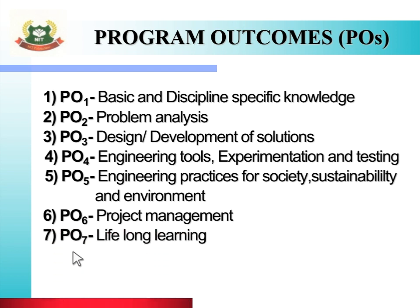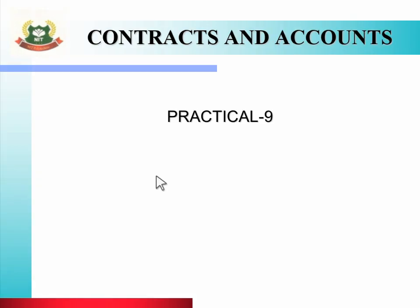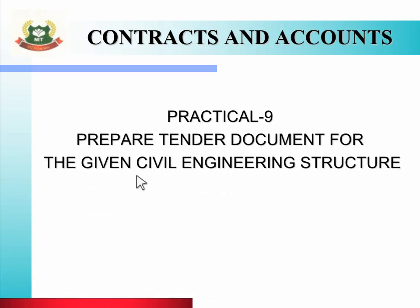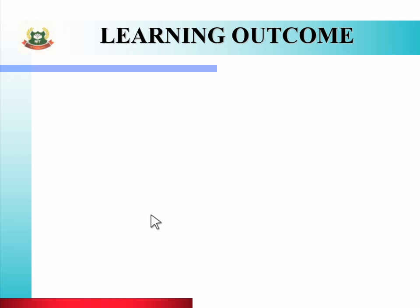And PO 7 is lifelong learning. In today's session, we will see Practical Number Nine. The name of the practical is: Prepare tender document for the given civil engineering structure. To study this practical, we will go through the learning outcome, which includes course outcome, program outcome, and practical outcome.